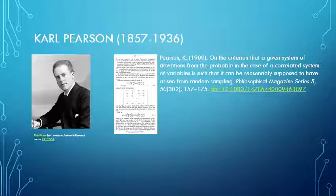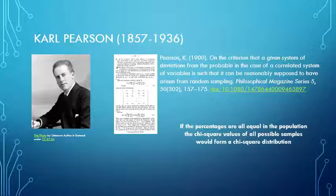In essence, what he concluded was that if the percentages would all be equal in the population, then the chi-square values of all possible samples would form a so-called chi-square distribution. There's something about chi-square values, and there's something about those forming a specific type of distribution.